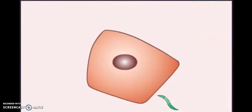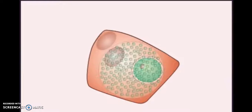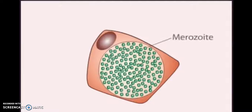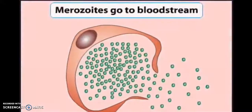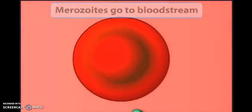A sporozoite enters a liver cell and begins to feed and grow. During this process, the parasite's nucleus divides many times, and the nuclei produce thousands of new Plasmodium cells in a form called merozoites. About a week later, the merozoites burst out of liver cells and enter the bloodstream.